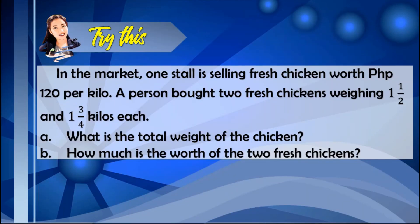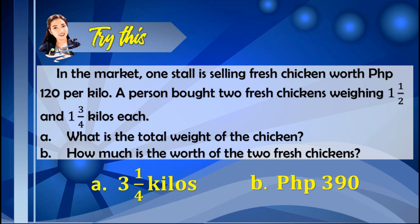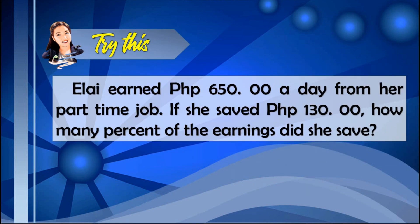We are now done with the discussion. It is your turn to solve some problems to check your understanding. You may pause the video to answer the given problems. Let's check your answers: Letter A — the answer is three and one-fourth kilos; Letter B — the answer is 390 pesos. The answer for the next item is 20 percent.